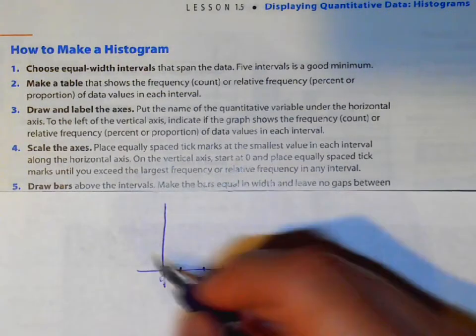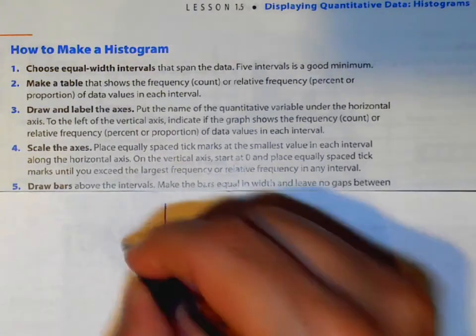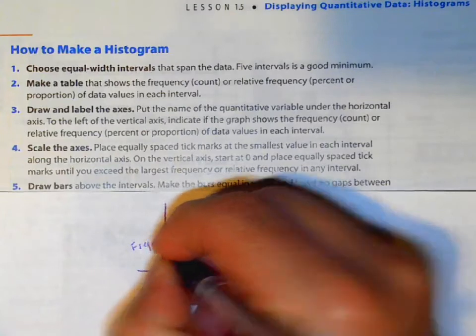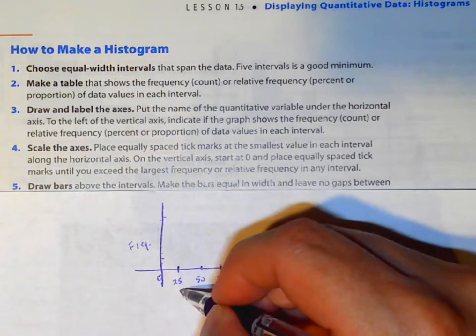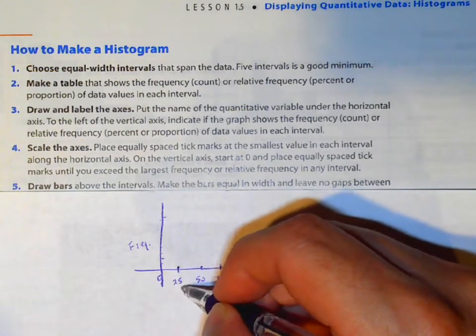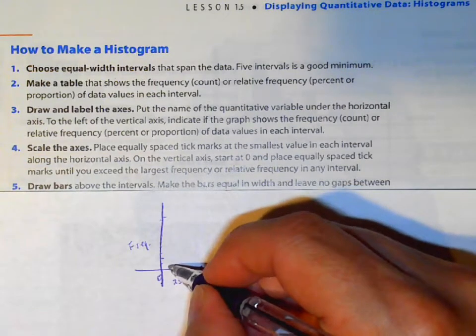Then you want to see how many times. So between 0 and 25, you're thinking about what is the frequency? How many times did it happen? Now, what if something is exactly 25? Does it go in here or is it going there?